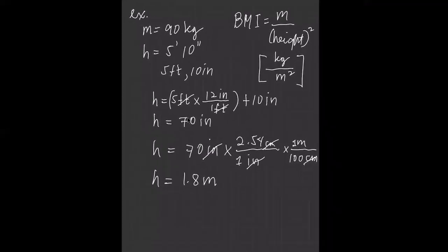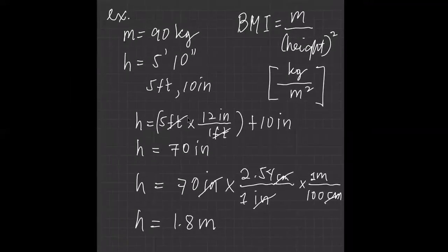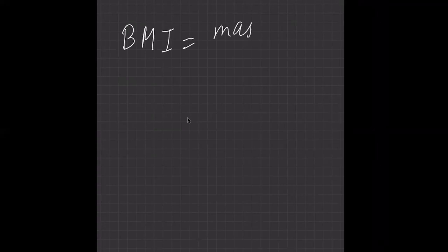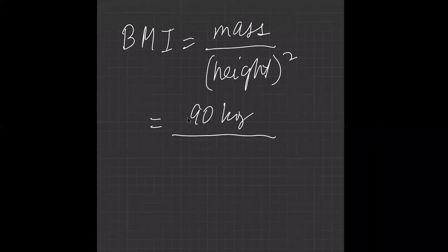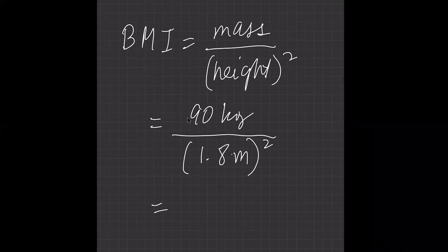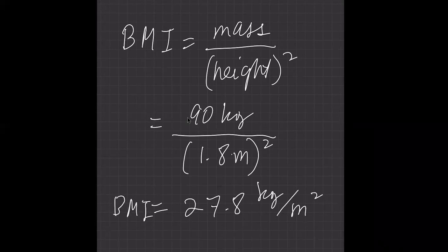Now we can compute the Body Mass Index. BMI equals mass divided by height squared: 90 kilograms divided by 1.8 meters squared. Using your calculator — 90 divided by 1.8 divided by 1.8 — you should get approximately 27.8 kilograms per meter squared.